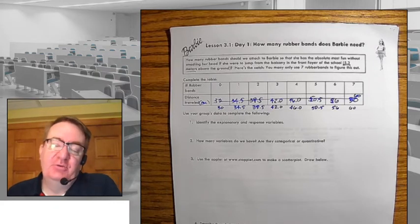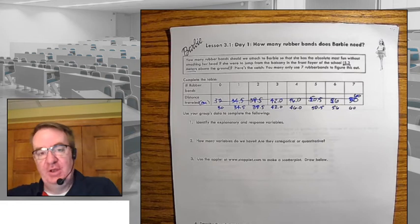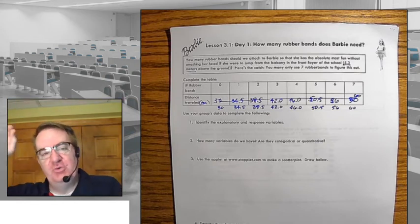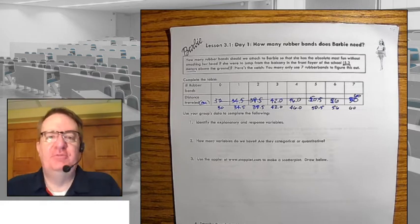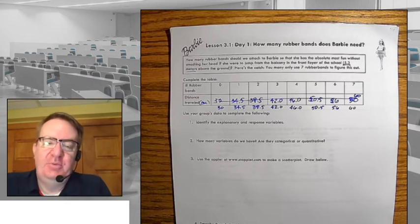In our case, it's a third-floor stairwell, all the way down to the first floor. And the goal there is to tie her up to a bungee cord made out of rubber bands and hopefully have her come very close but not actually hit the floor because, you know, a dead Barbie is not a good Barbie.